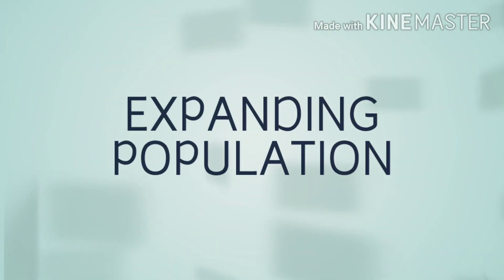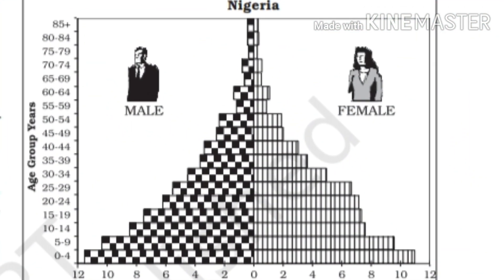This is a pyramid of expanding population. This pyramid is of triangular shape and is drawn for developing countries where the birth rate is high and a high proportion of population is found in lower age groups. This pyramid is drawn for Nigeria, Pakistan, Bangladesh, Brazil, and all other developing countries where birth rates are very high. The proportion of population reduces in higher age groups, so this pyramid takes a triangular shape.